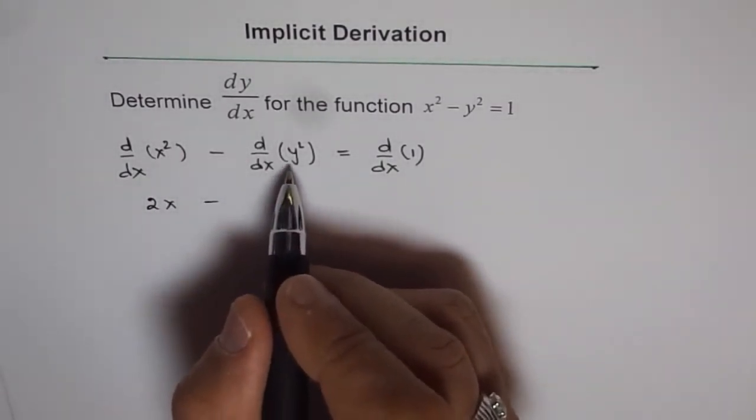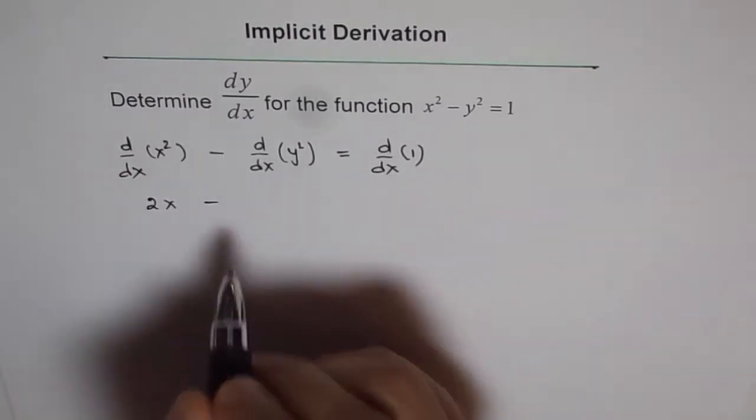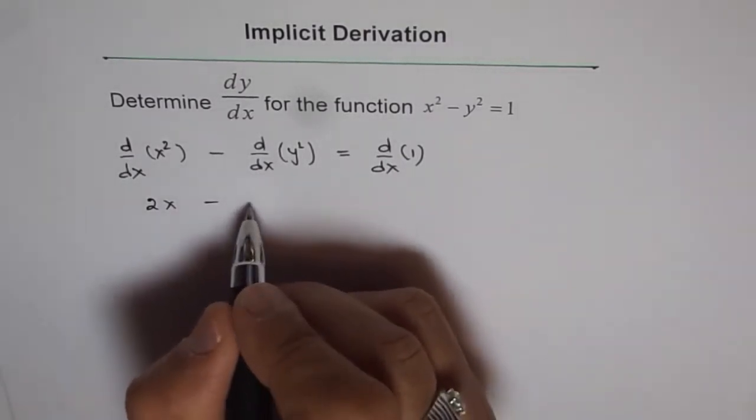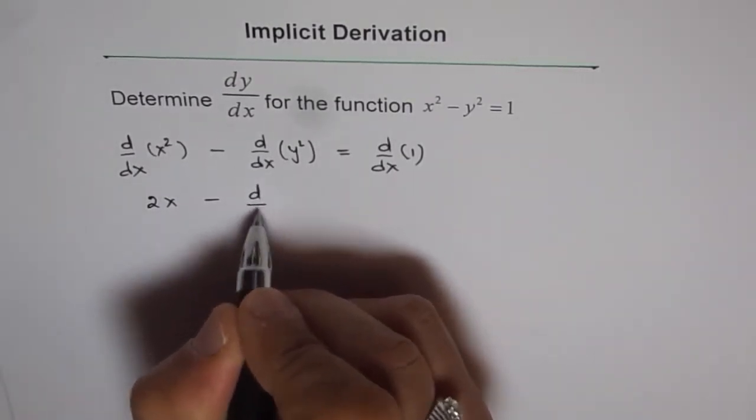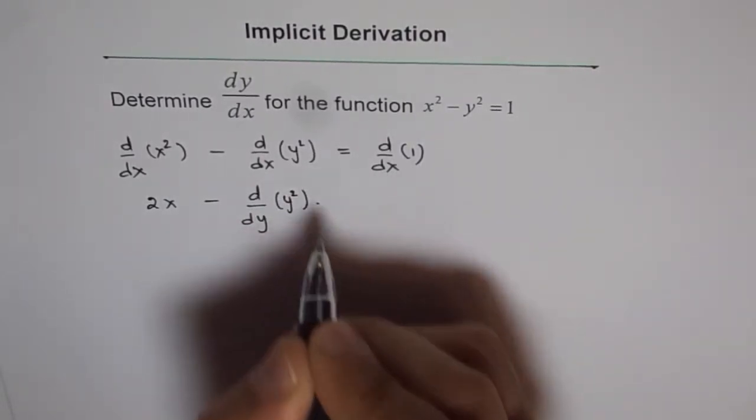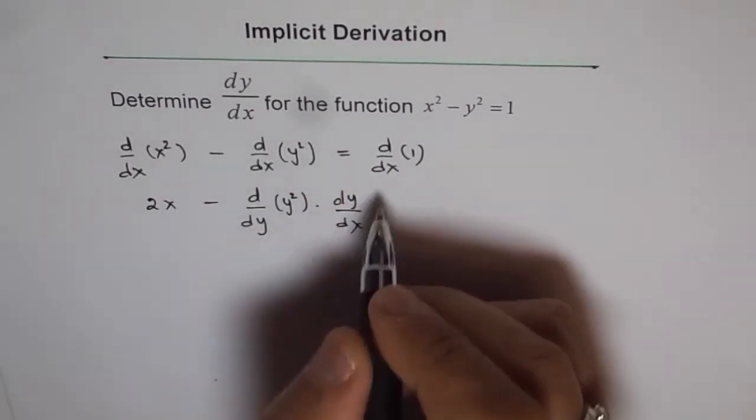now we need to find derivative of y² with respect to x. To do that, we need to use chain rule. So this could be written as d/dy of y² times dy/dx. That is the chain rule applied here.